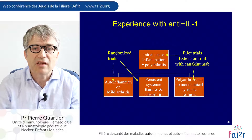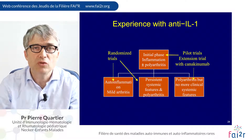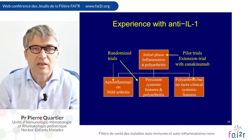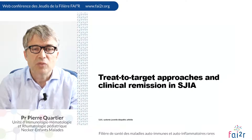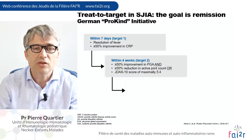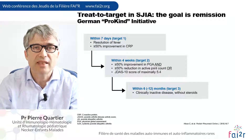IL-1 inhibitors have been used both in the early phase of disease and in patients with long-lasting but not too diffuse polyarthritis. Randomized trials were performed in patients at an early stage with persistent fever, inflammation, and arthritis. A treat-to-target approach has more recently been proposed, with the key goal of controlling fever very quickly — within seven days, achieving no fever and low CRP.